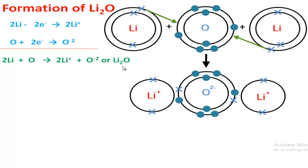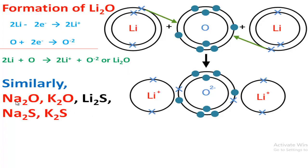Similarly, you can explain the formation of sodium oxide, potassium oxide, lithium sulfide, sodium sulfide, and potassium sulfide. Among them, sodium oxide, potassium oxide, and sodium sulfide are very very important. I hope you can clearly understand about ionic bonding and the formation of ionic compounds.